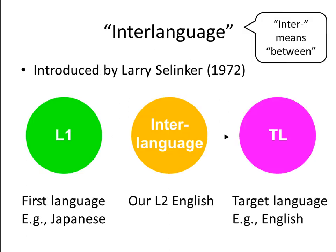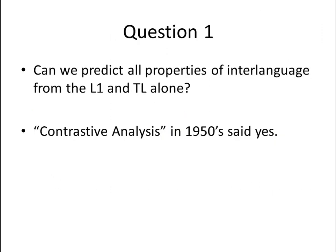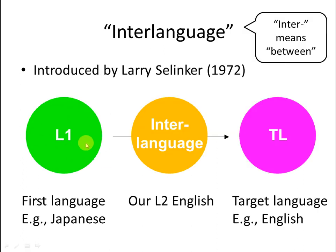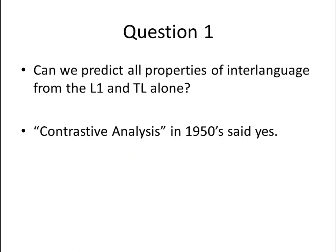We need to understand the properties and characteristics of interlanguage, because this is our second language. Can we predict all properties of interlanguage from the first language and the target language alone? In the 1950s we had contrastive analysis, which said yes — we can predict all properties of interlanguage from the first language and the target language.